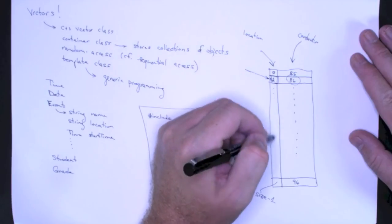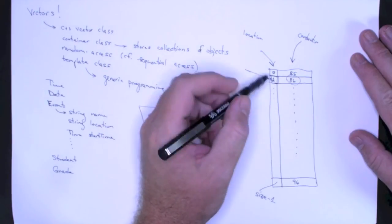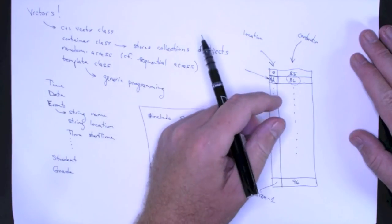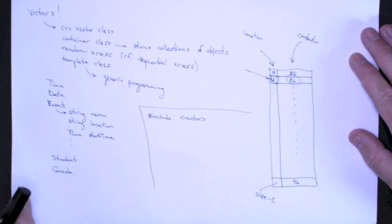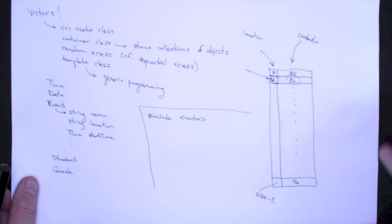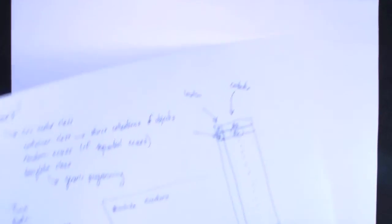And they're very convenient for processing with for loops. And so we'll take a look at that also. So let's look at how we would go about declaring a vector of some type.